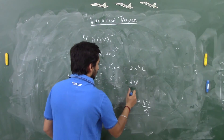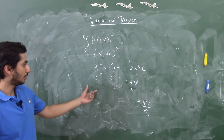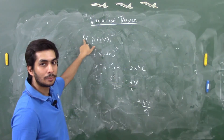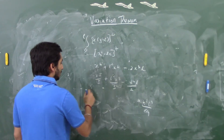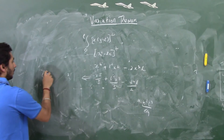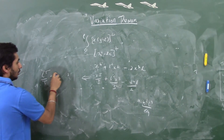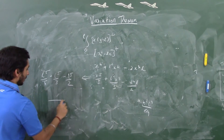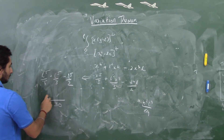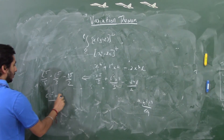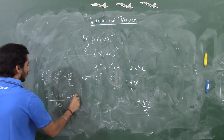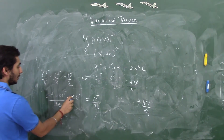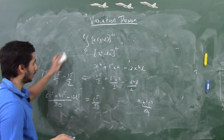The lower limit is 0, so all terms vanish. At the upper limit x = L: L⁵/5 + L⁵/3 − L⁵/2. Taking common factor 30: (6L⁵ + 10L⁵ − 15L⁵)/30 = L⁵/30. So the denominator is L⁵/30.